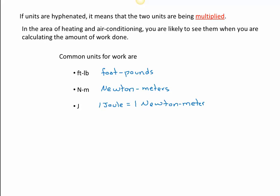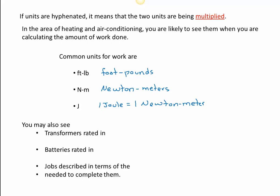Some other hyphenated units that you might encounter, perhaps on a transformer. Transformers are usually rated in volt amps. We multiply the voltage by the amperage. Batteries are rated in amp hours. Or a job might be talked about in terms of the man hours needed to complete it.